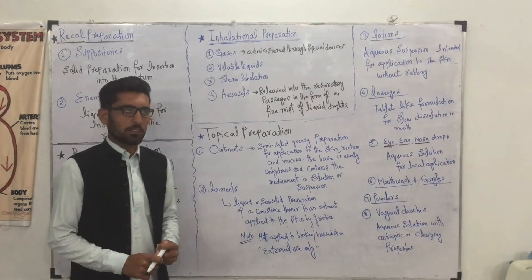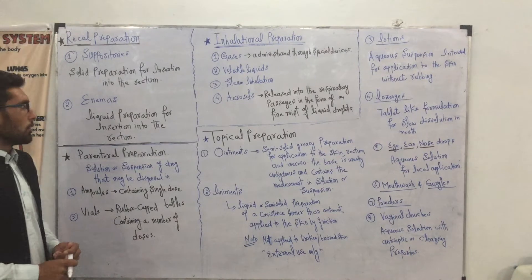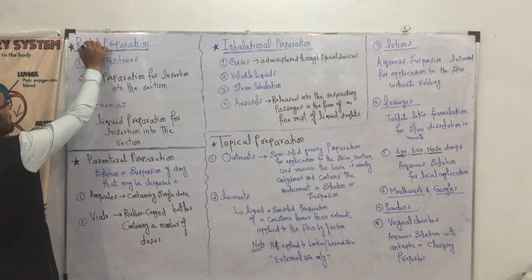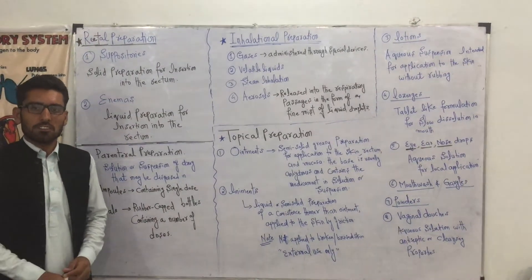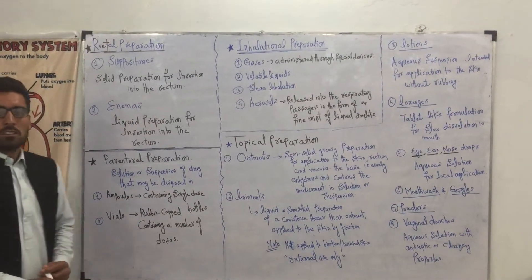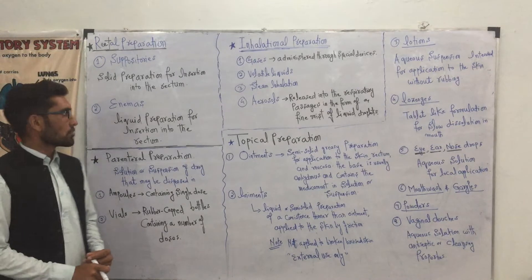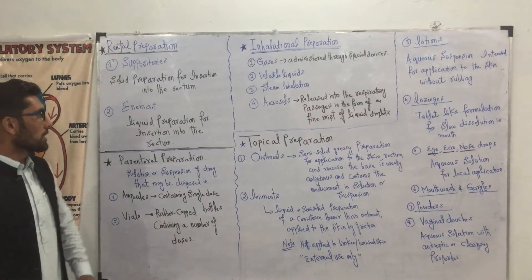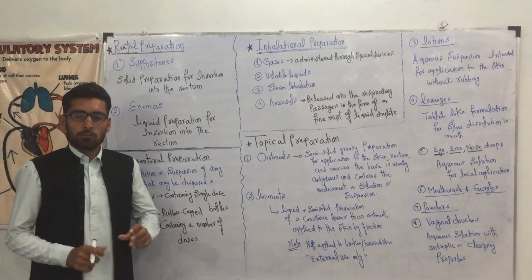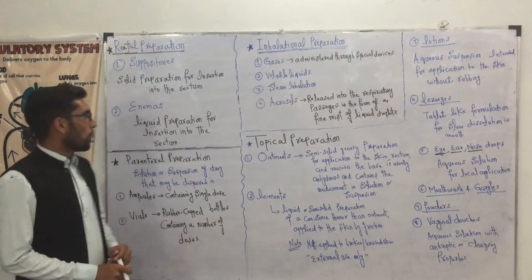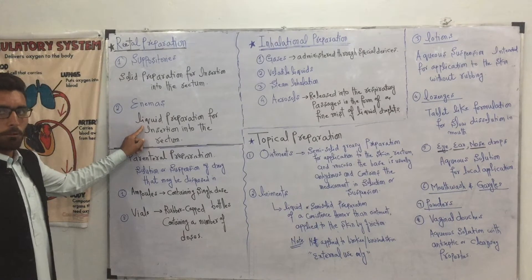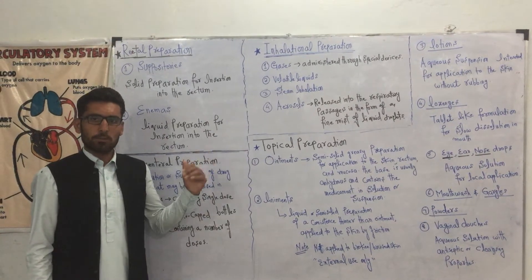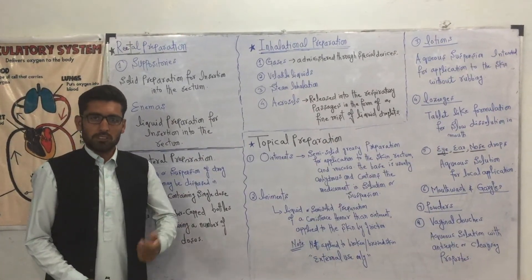Today we are going to discuss different types of dosage forms one by one. The first is rectal preparations or rectal dosage forms. These include suppositories and enemas. Suppositories are solid dosage forms — solid preparations for insertion into the rectum. While enemas are liquid dosage forms — liquid preparations for insertion into the rectum, especially used in constipation-related cases.